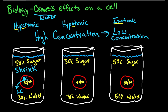Moving on to the hypotonic solution — we have 70% water outside and 50% inside. The higher concentration is outside the cell, so water flows in. Water entering the cell is going to make it expand or burst. And lastly for the isotonic solution, we have 50% water outside and 50% inside — it's equal. Water goes in and out freely, so there is no change.